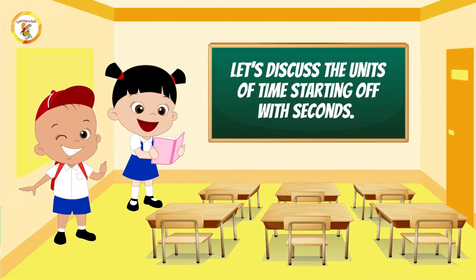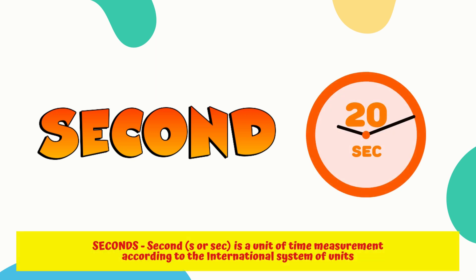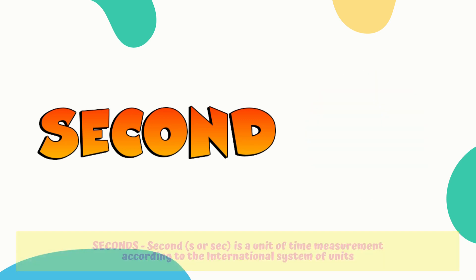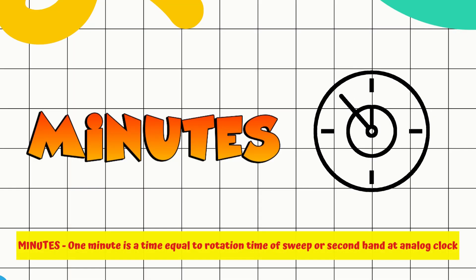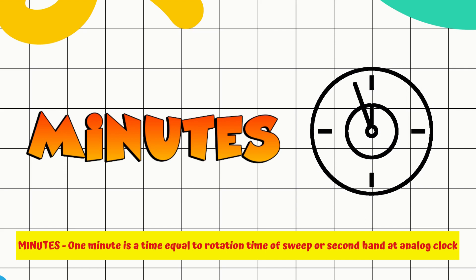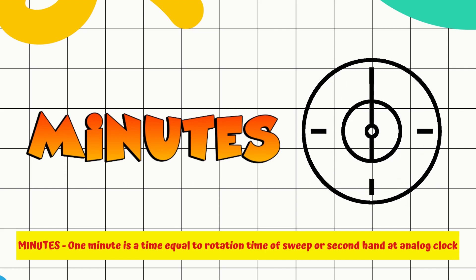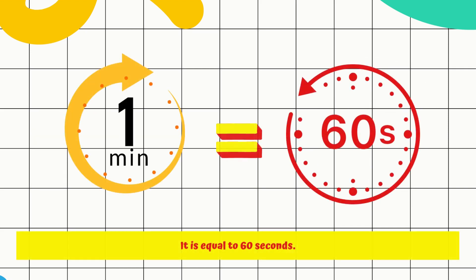Let's now discuss the units of time starting off with seconds. A second is a unit of time measurement according to the International System of Units. It is the smallest unit of time, equal to a 60th of a minute. Its symbol is S or SEC. One minute is a time equal to the rotation time of the sweep or second hand on an analog clock — equivalent to 60 seconds.